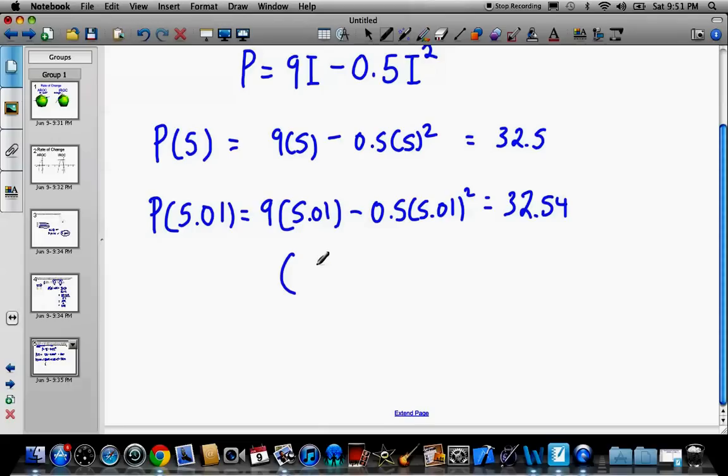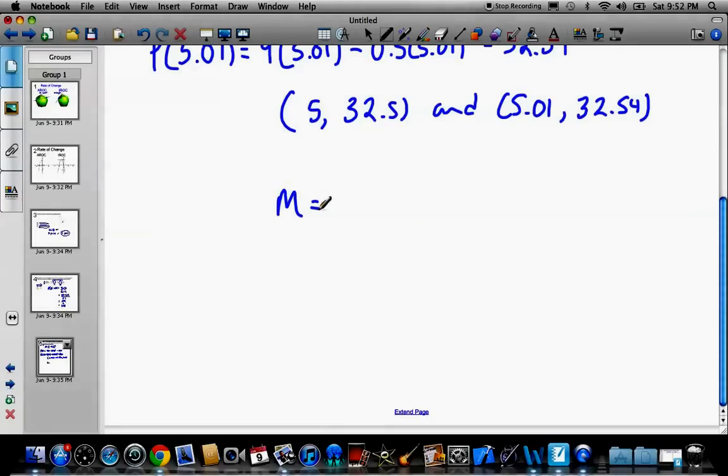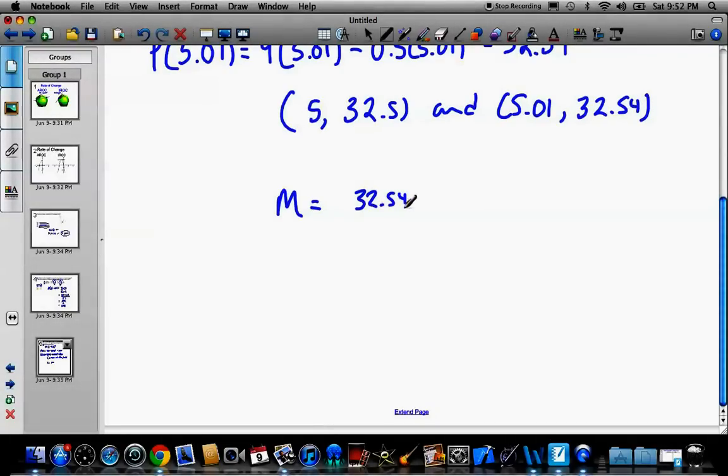Now, what we have here is basically two points. We have (5, 32.5) and (5.01, 32.54). So these are our two points that we're going to use slope on. So slope is equal to 32.54 subtract 32.5 divided by 5.01 minus 5. It doesn't matter what points go in what order, as long as you're consistent. You start with this one, these two numbers always go first. I usually try to work it so I don't have to deal with negatives. And I'm just calculating this here, guys, now.